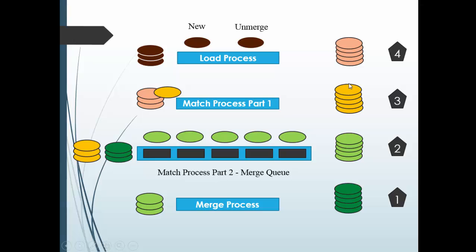An important point about this flow: match process part one and part two happen so quickly that the consolidation indicator changes from 4 to 2 very fast. Only if you are running a huge dataset can you identify records with consolidation indicator 3. With a small dataset you will not notice in the database how the value changes from 4 to 3 and then 3 to 2. Normally it runs very quickly, so in the database we typically see values 4, 2, and 1. Sometimes we can't see the value 3 because the process is so fast.